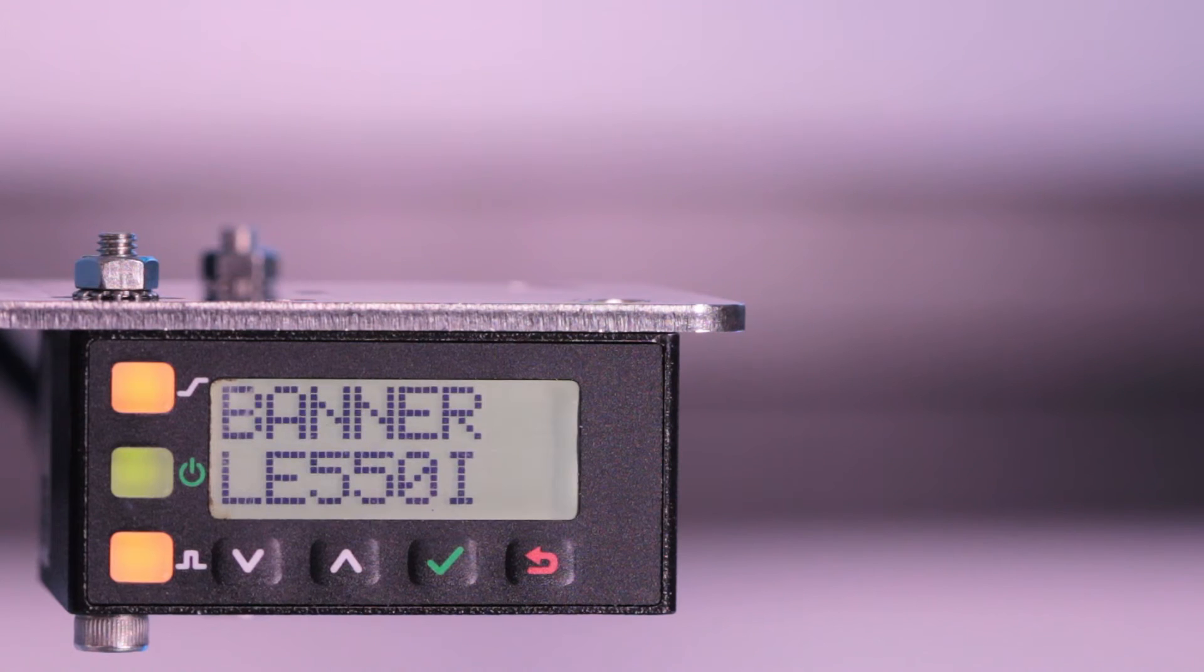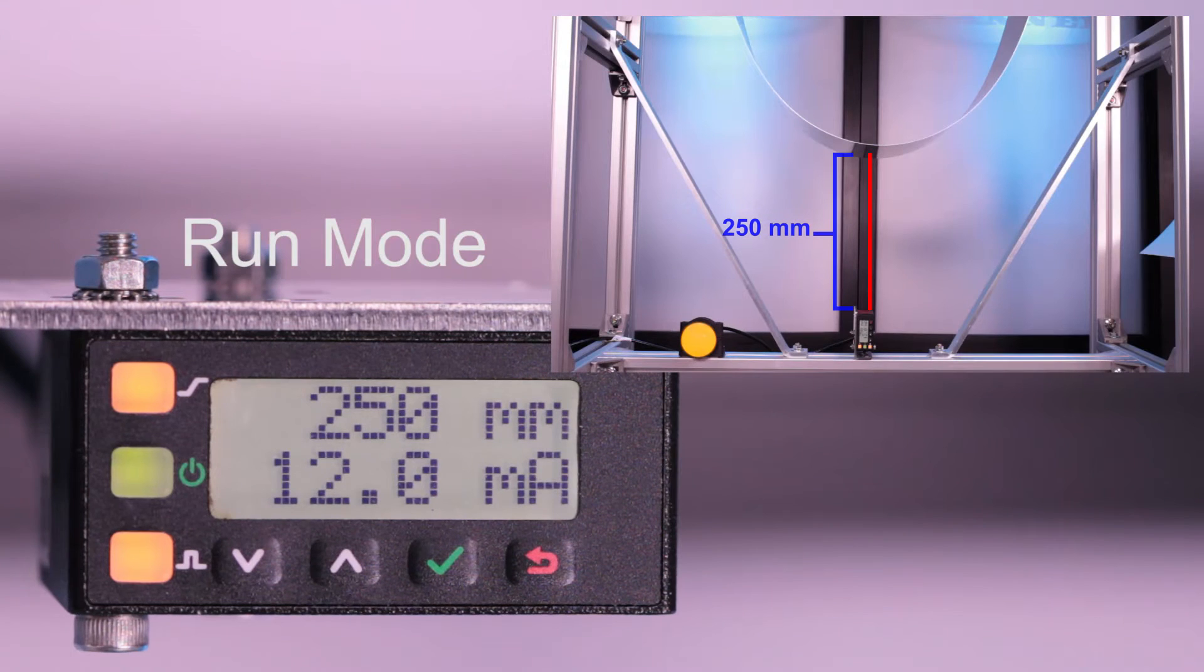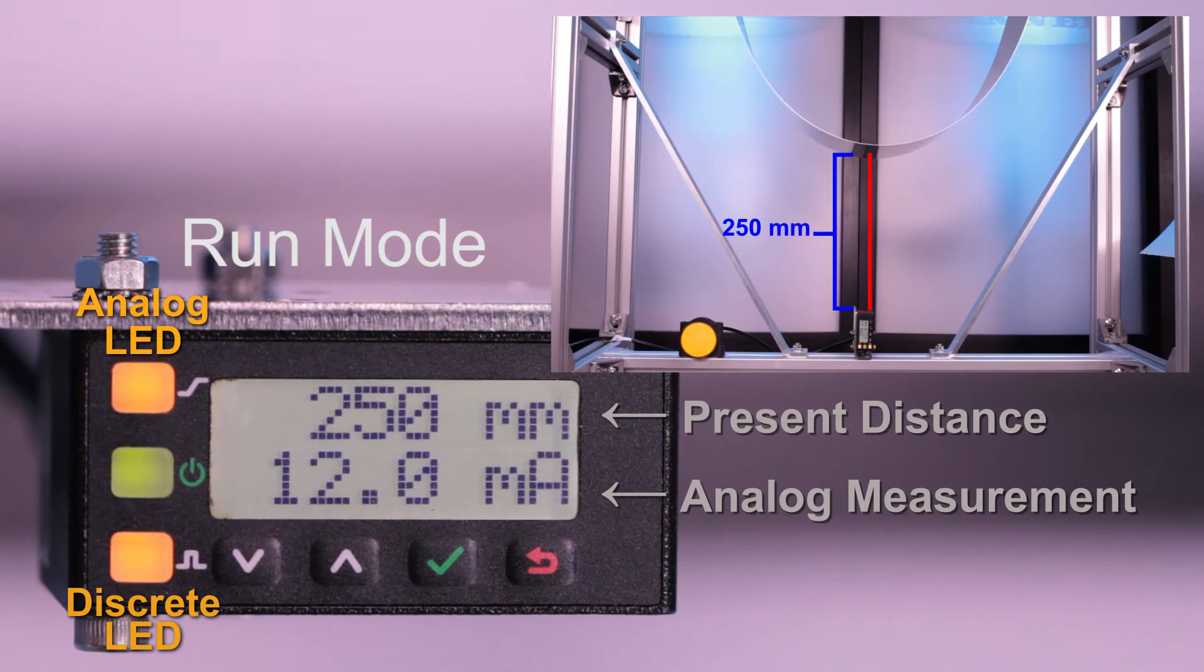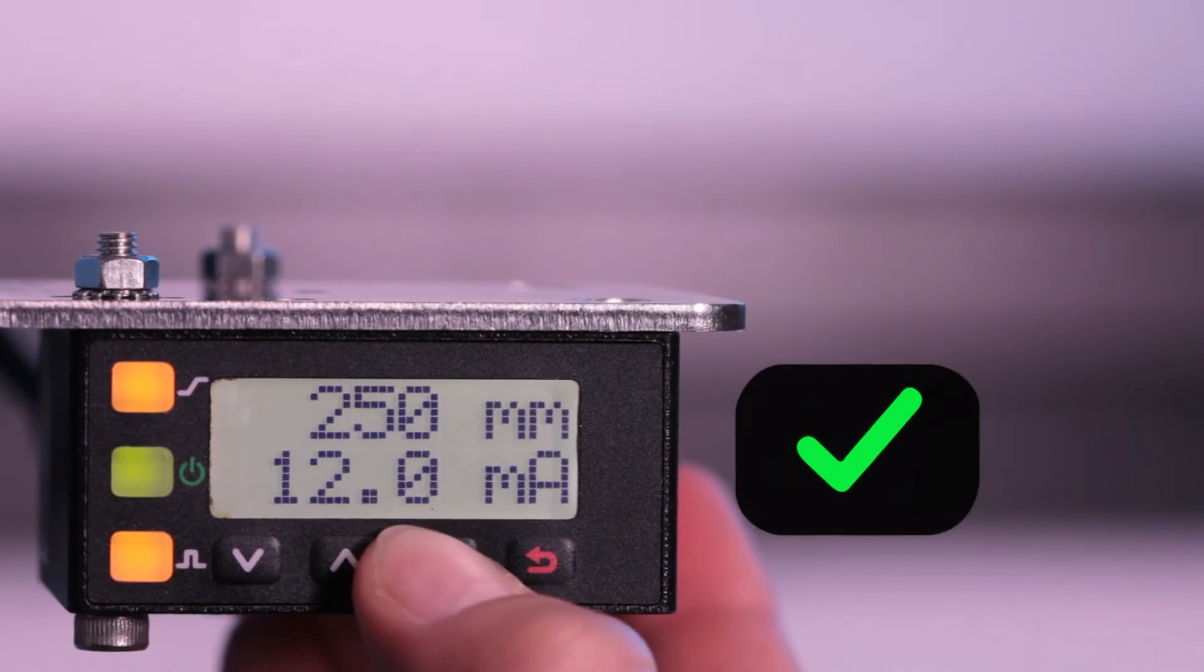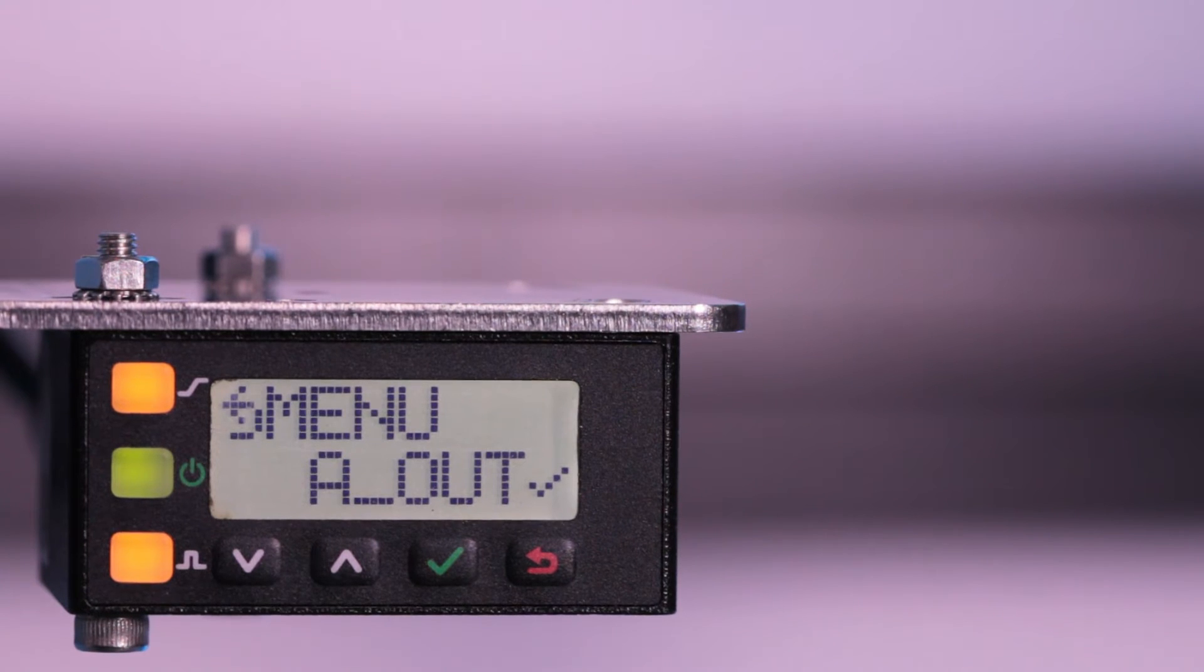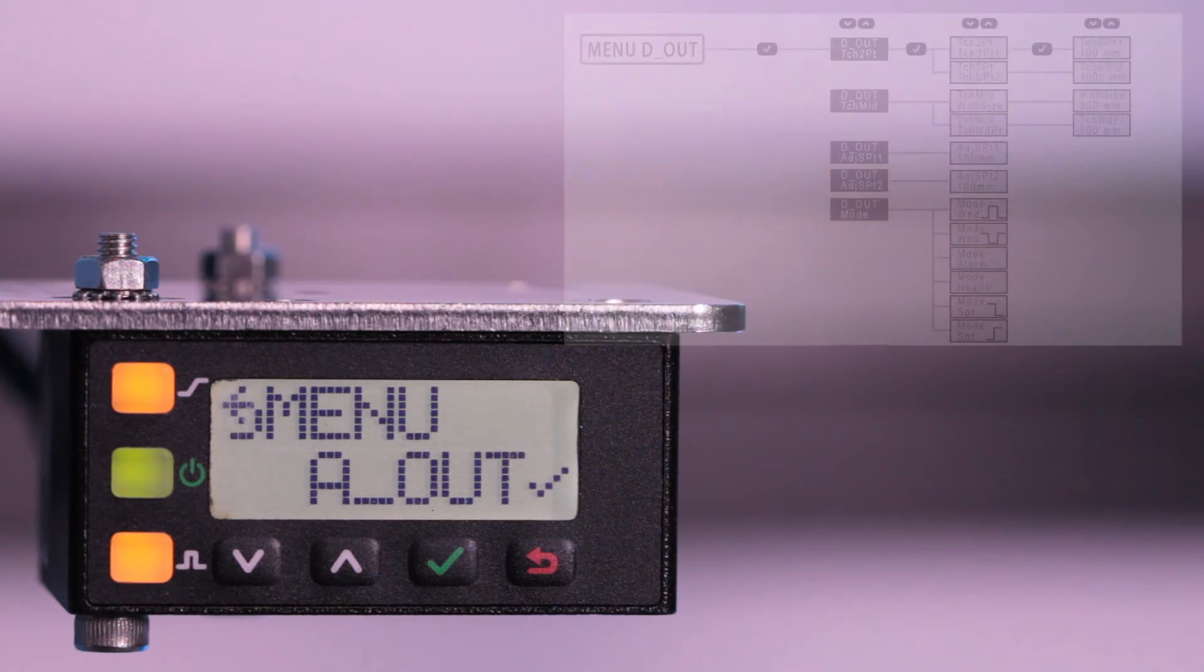When first powered on, the sensor begins in run mode, displaying the present distance and analog measurement. Click the enter button to access the sensor menu. The first option within the sensor menu is the analog output submenu.